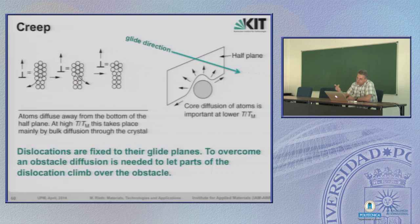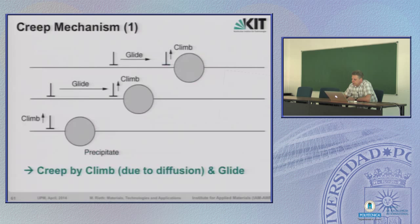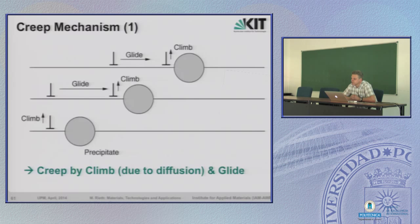At lower temperatures in creep — around 0.3 to 0.4 of melting temperature — diffusion happens through dislocation cores. At some higher temperature, we also have lattice diffusion. That's the climb-and-glide creep mechanism: climb is only possible by diffusion, then glide. This explains why we have constant deformation over time — what we call creep. Creep by climb explains the higher stress regime.